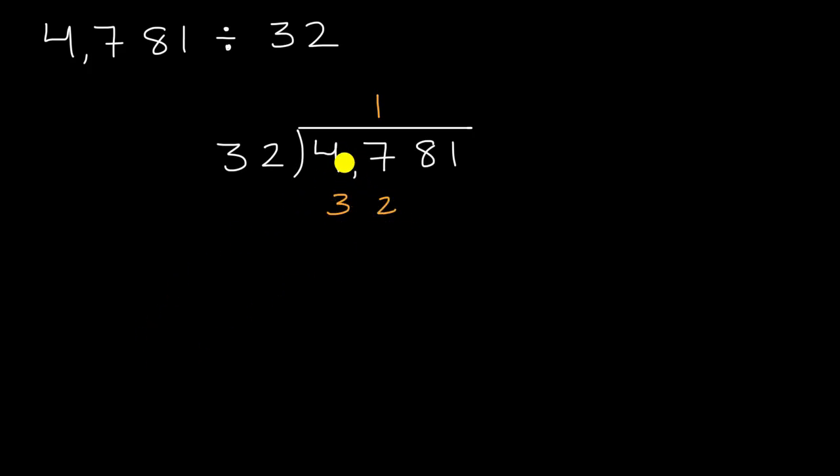And then we subtract 32 from 47. Let's do that. And we get seven minus two is five. And four minus three is one. And the way you make sure that you did that step right is whatever we get over here should be less than 32. If whatever we have here is 32 or greater, that means we could have had a larger number up here.